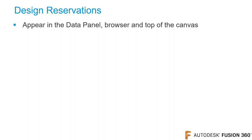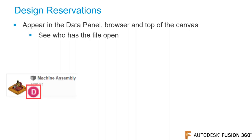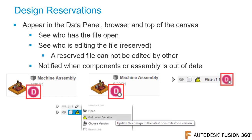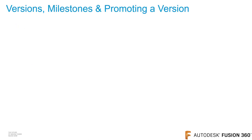Design reservations show you who is working or editing a file — this prevents design conflicts. Initials and a white dot will be displayed in the data panel, browser, and if multiple people have the file open, will be displayed at the top of the canvas. When a person has a file open, their initial will appear. When a file has a pending save, a white dot appears to the lower right corner of the initial. A reserved file cannot be edited by others. After saving the file, any assemblies that reference this file will show a yellow triangle, letting everyone know that there is a new version of this file.